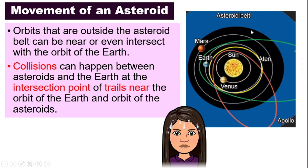If they do not meet, that's fine. But what if it so happened that Apollo is at the intersection point and the Earth is also there at the same time? What might happen? They might have a collision.